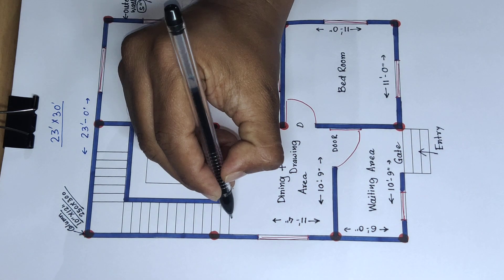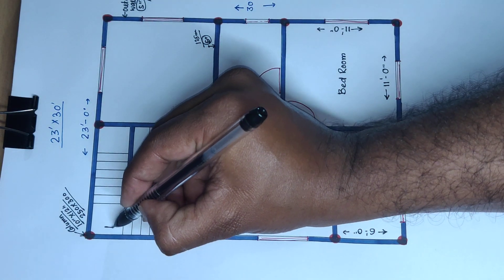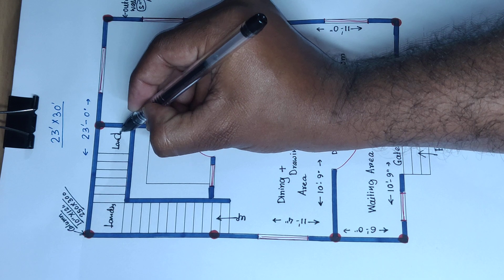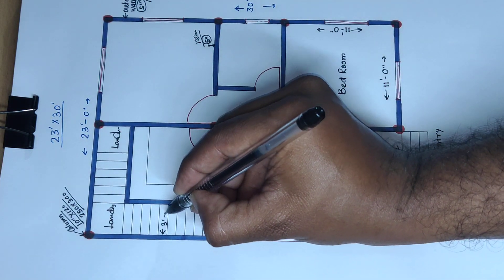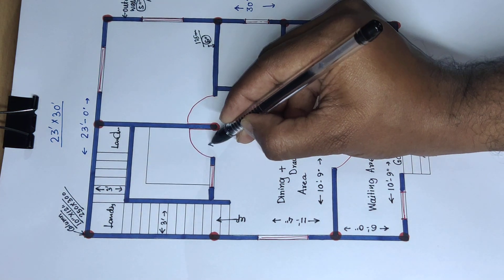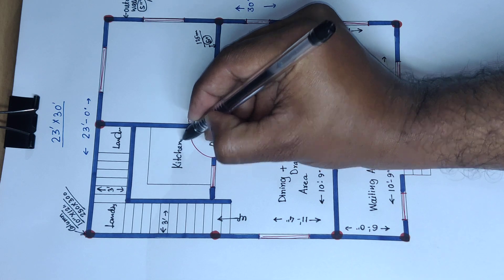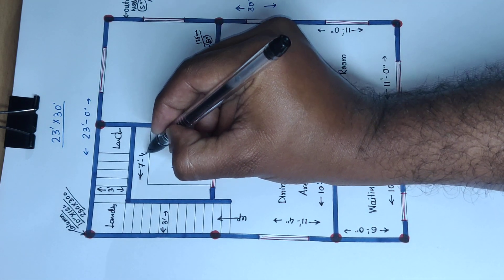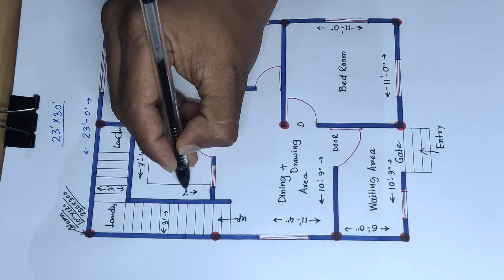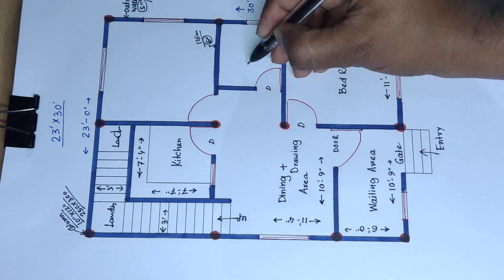And now this is the upstairs landing area — this side distance is 3 feet and this side distance is 3 feet. And door — this is the kitchen area, kitchen room — 7 feet 4 inch wide or this side 7 feet 7 inch wide.